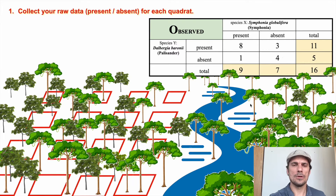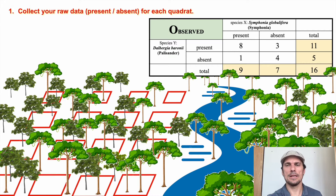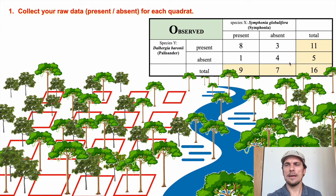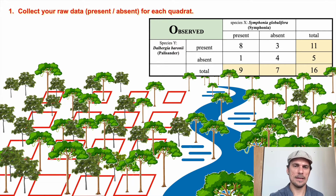I would go through every quadrat — present or absent depending on the species — and fill them out. This is what I got; you can double-check my pictures and my work here. I would total them up across the rows and down across the columns. That should come to 16, the number of quadrats I laid. Looks good.